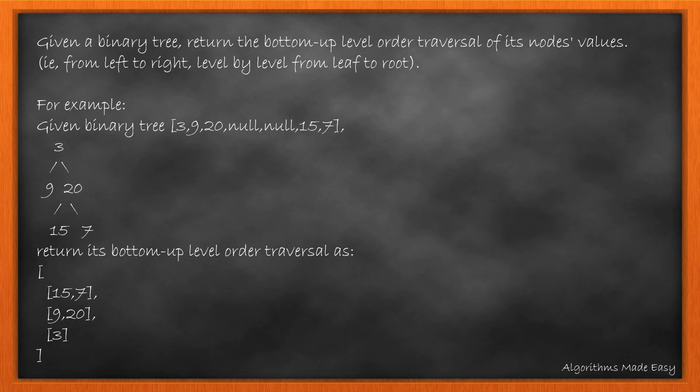Given a binary tree, return the bottom-up level order traversal of its node values, i.e., from left to right, level by level, from leaf to root. In the given example, we start giving the output from leaf to root. So we first add 15 and 7, then move up and add 9 and 20, and lastly the root 3. Let's see two ways to solve the problem.